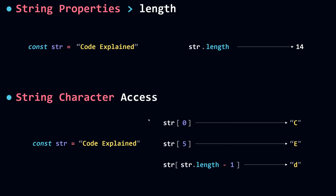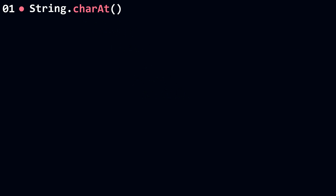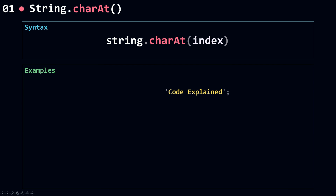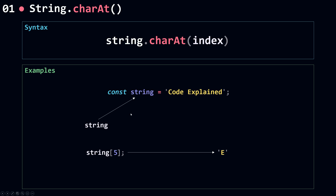Now let's move on to the first string method: charAt. It's used to access a single character in a string. The syntax is string.charAt() and it takes a single parameter — the index of the character you want to access. For example, if I say string.charAt(5), this returns the character 'e', the same result as using string[5] with square bracket notation. That's how you use the charAt method to access a character in your string.